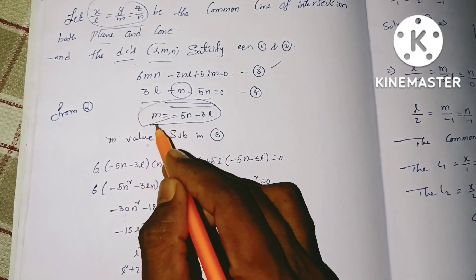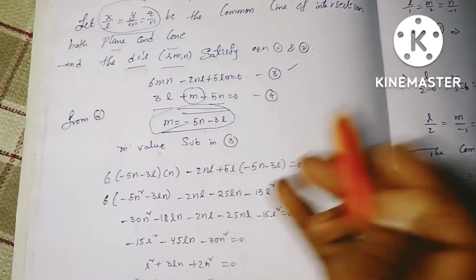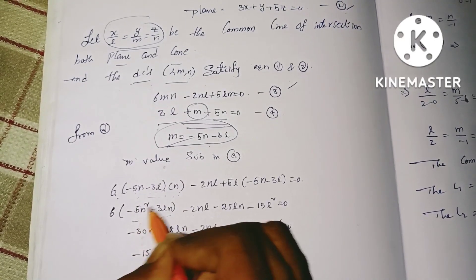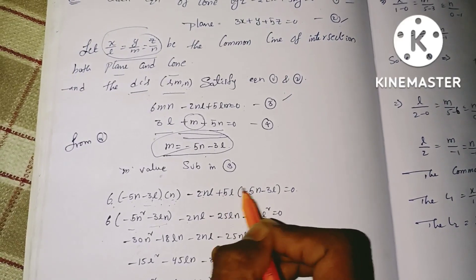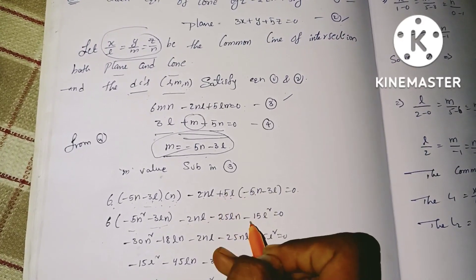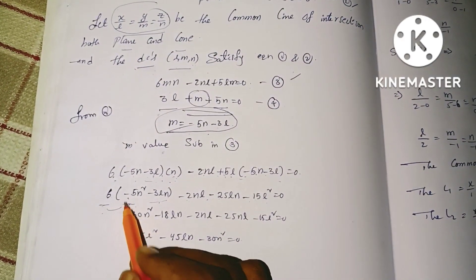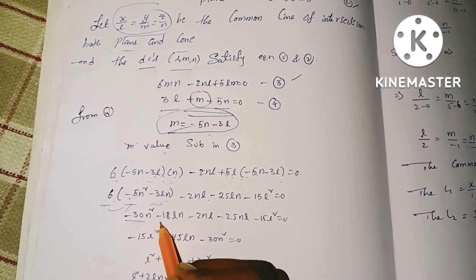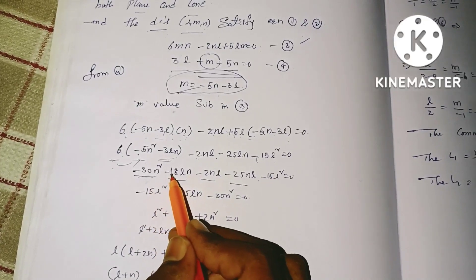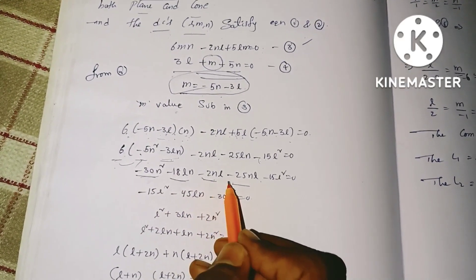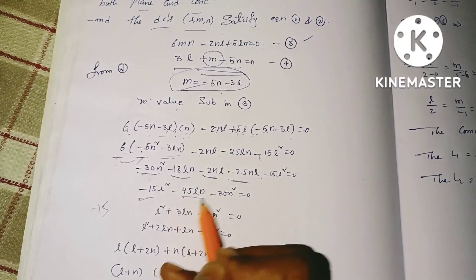Equation 3 gives us 6MN, so 6 into (−5N − 3L) into N, minus 2NL, plus 5L into (−5N − 3L) equals 0. Expanding: N into (−5N) = −5N², N into (−3L) = −3LN, minus 2NL, plus 5L into (−5N) = −25LN, and 5 into (−3L) gives −15L². So: −30N² − 18LN − 2NL − 25NL − 15L² = 0. Dividing through: L² + 3LN + 2N² = 0.